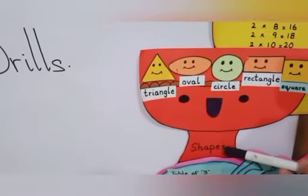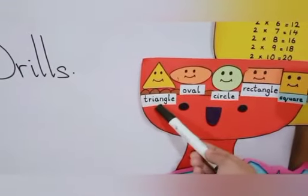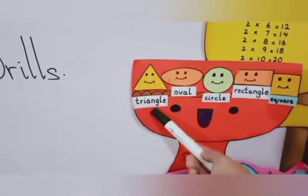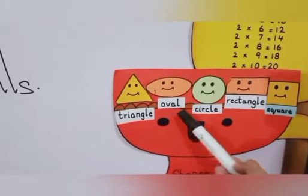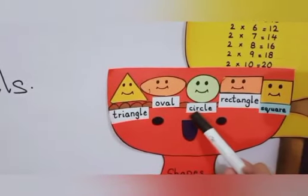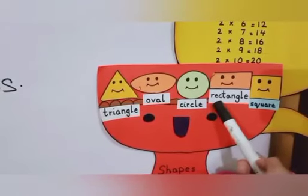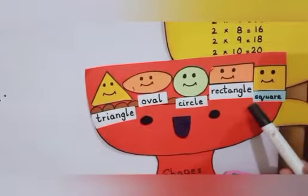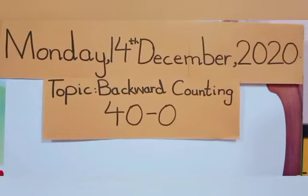Now we will do the oral drill of shapes. Which shape is this? Triangle. What is the spelling of triangle? T-R-I-A-N-G-L-E, triangle. Oval. Circle — C-I-R-C-L-E, circle. Rectangle — R-E-C-T-A-N-G-L-E, rectangle. And last one is square — S-Q-U-A-R-E, square.